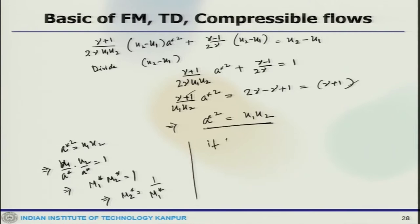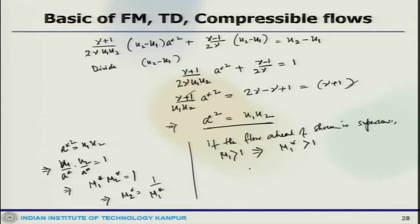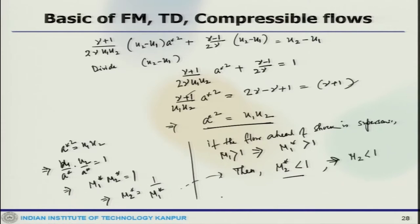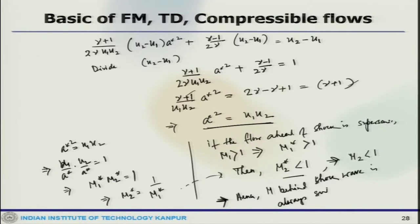If the flow ahead of the shock is supersonic, that means M₁ > 1, which means M₁* > 1. From the M* relationship, we can say that behind the shock the flow field will have M* less than 1. If M* is less than 1, that means M₂ would be less than 1.